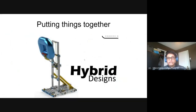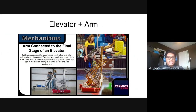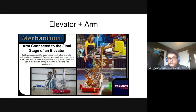Now we've got hybrid designs. Basically you've got an elevator plus an arm as one example. The advantage of that combination is you're more easily able to stay within frame perimeter, because if you need to reach an object outside of frame perimeter, you need some way of extending horizontally as well - not too far, just a little bit.